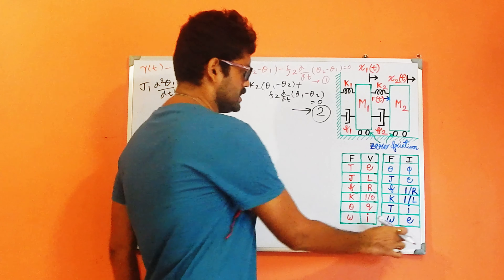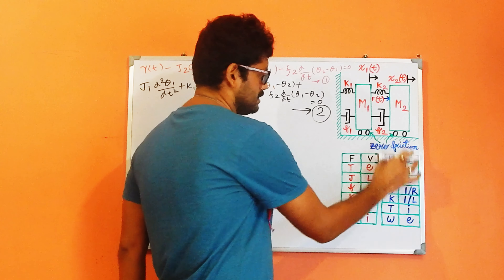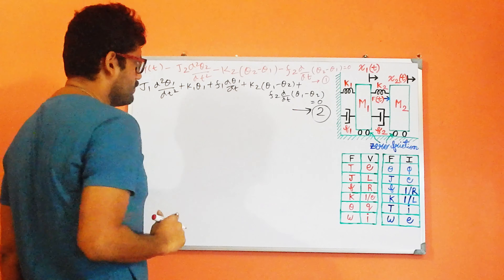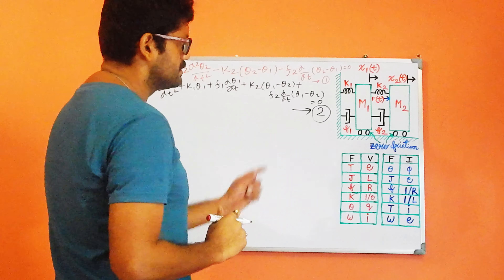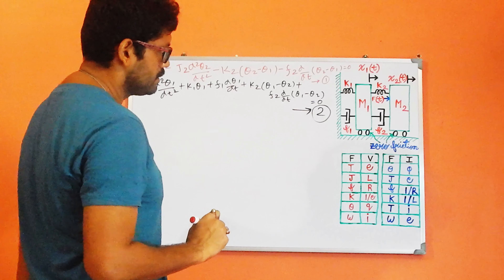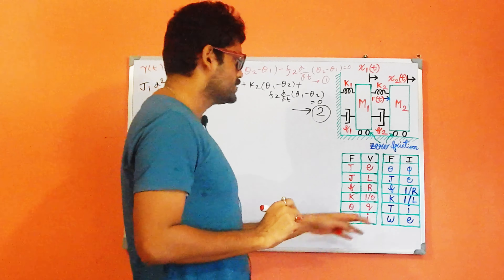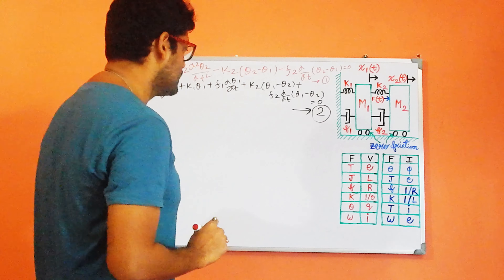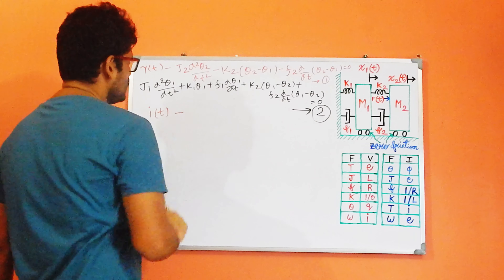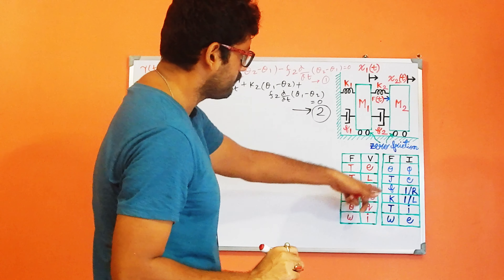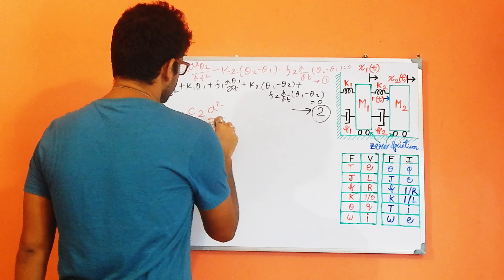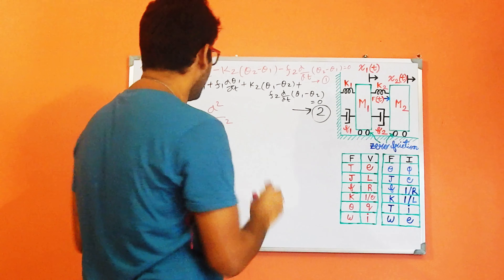As per our FI chart, we should utilize these parameters to convert our equivalent mechanical parameters in terms of our electrical parameters. So, I have the torque element τ. At the place of τ, I should write it as current I as per our FI analogy. So this is our I_T minus J2, which maps to capacitor C2.